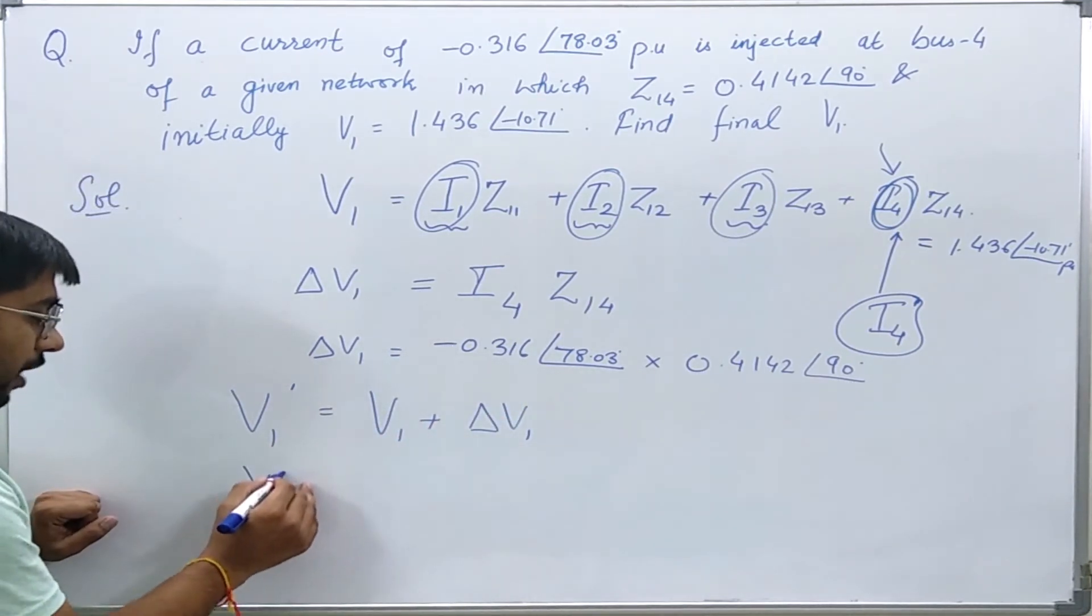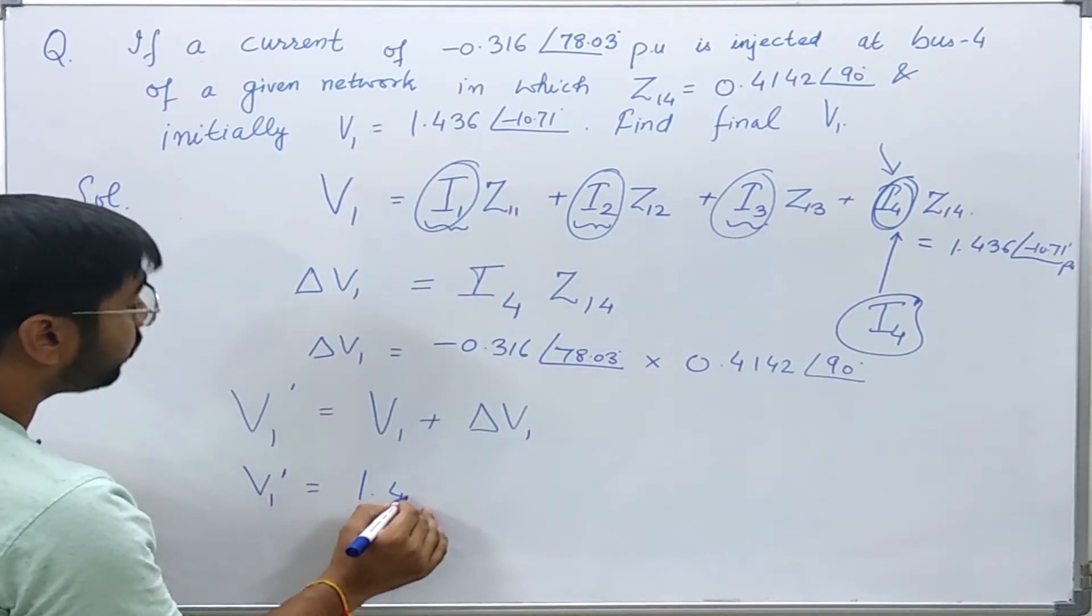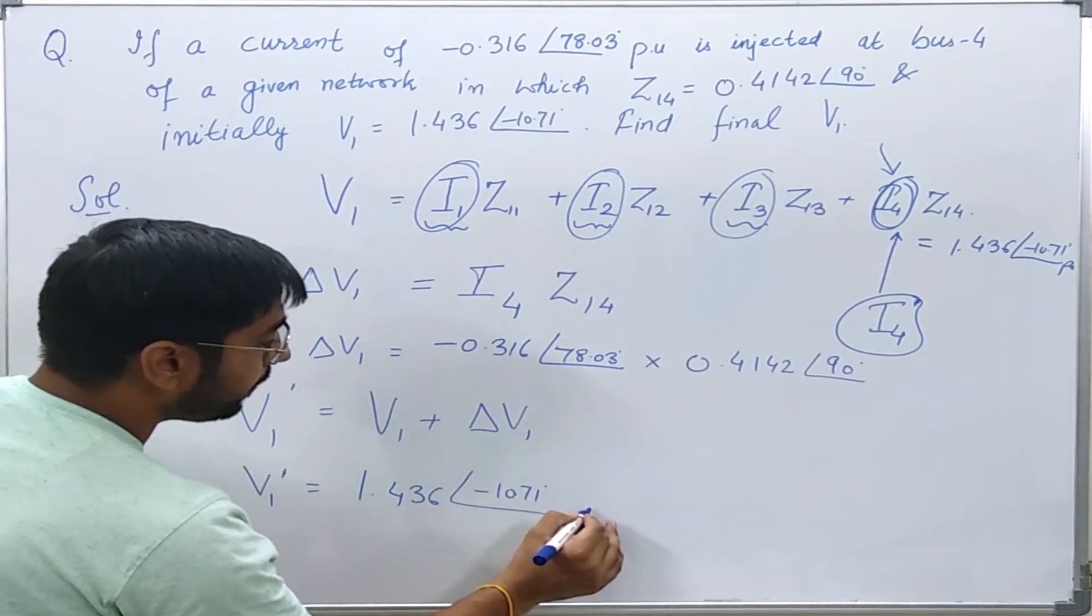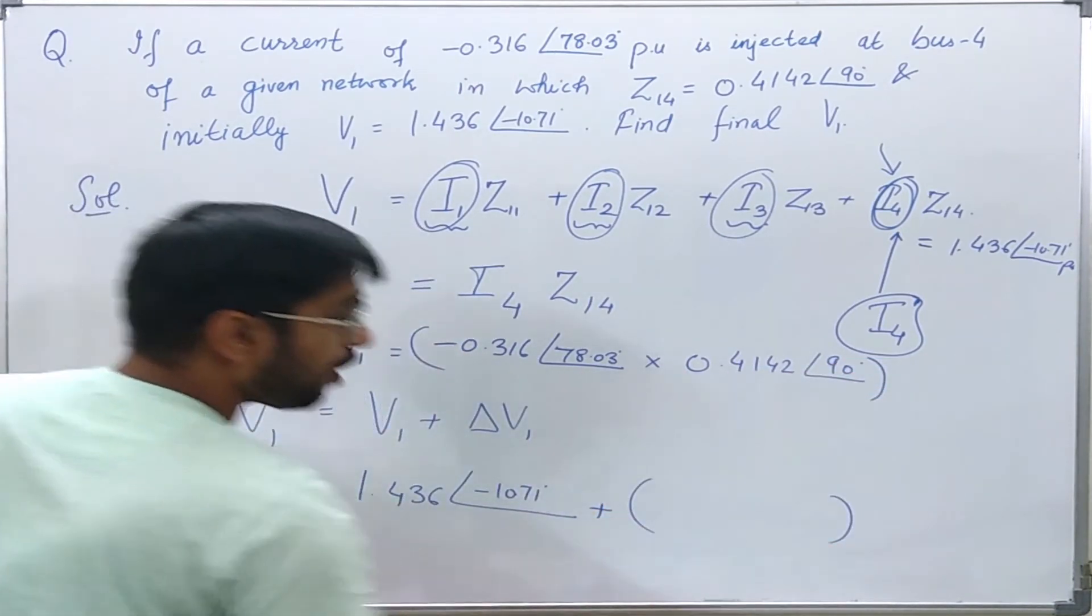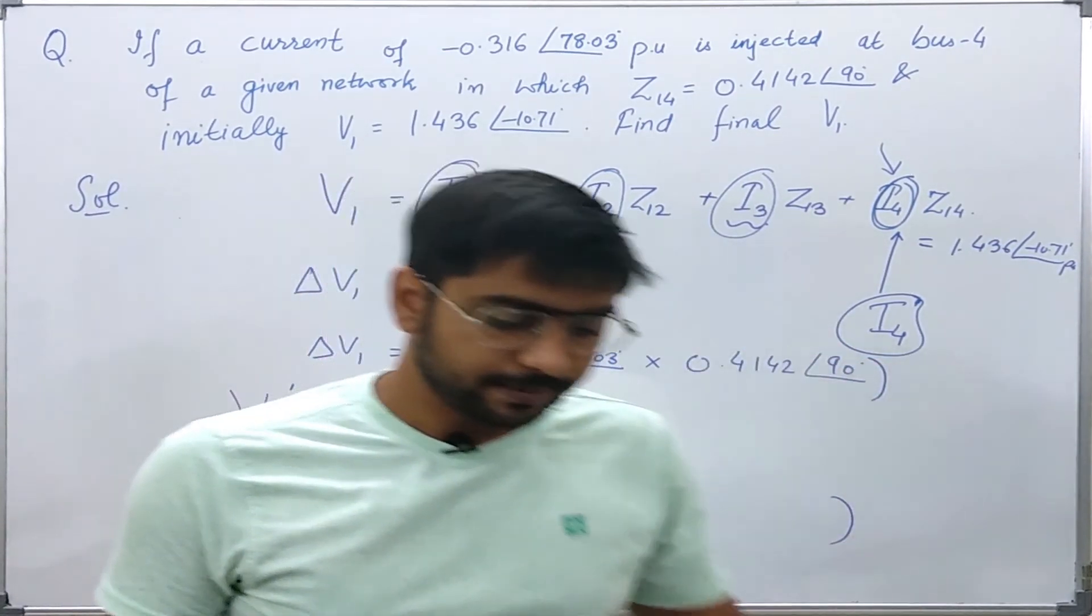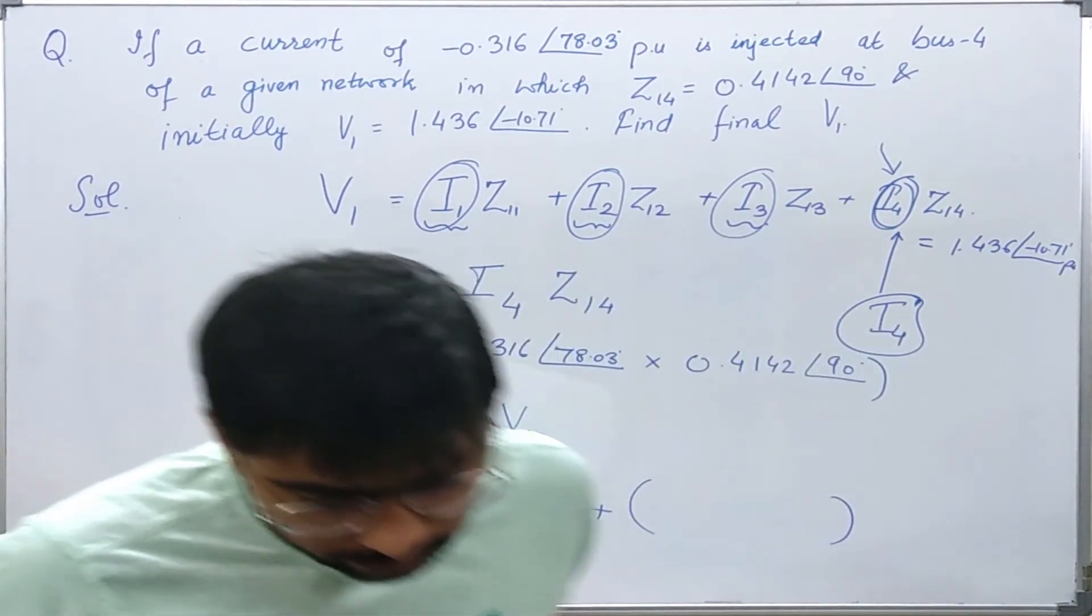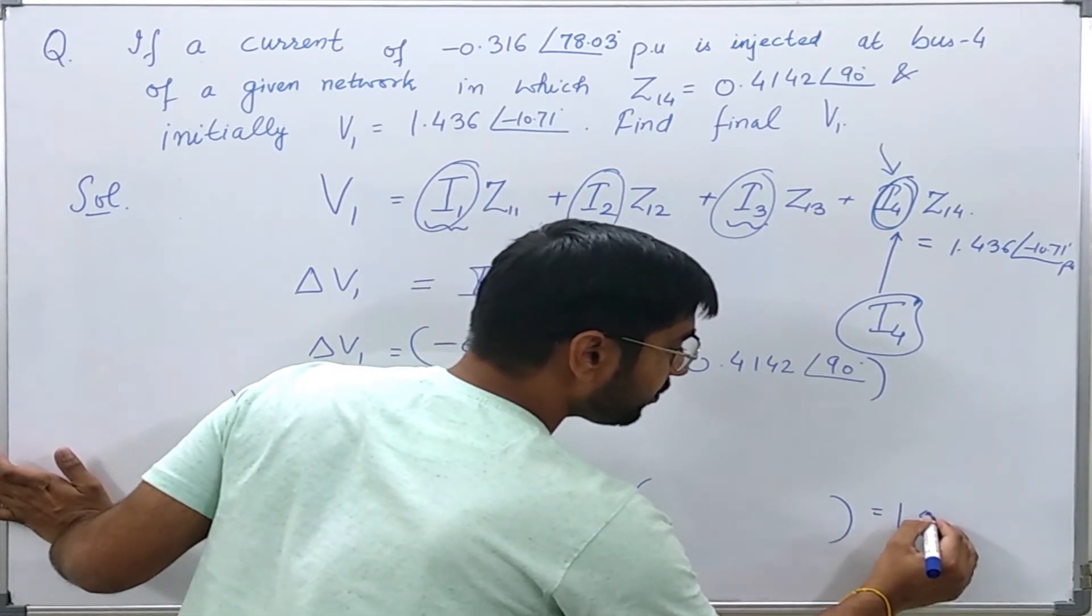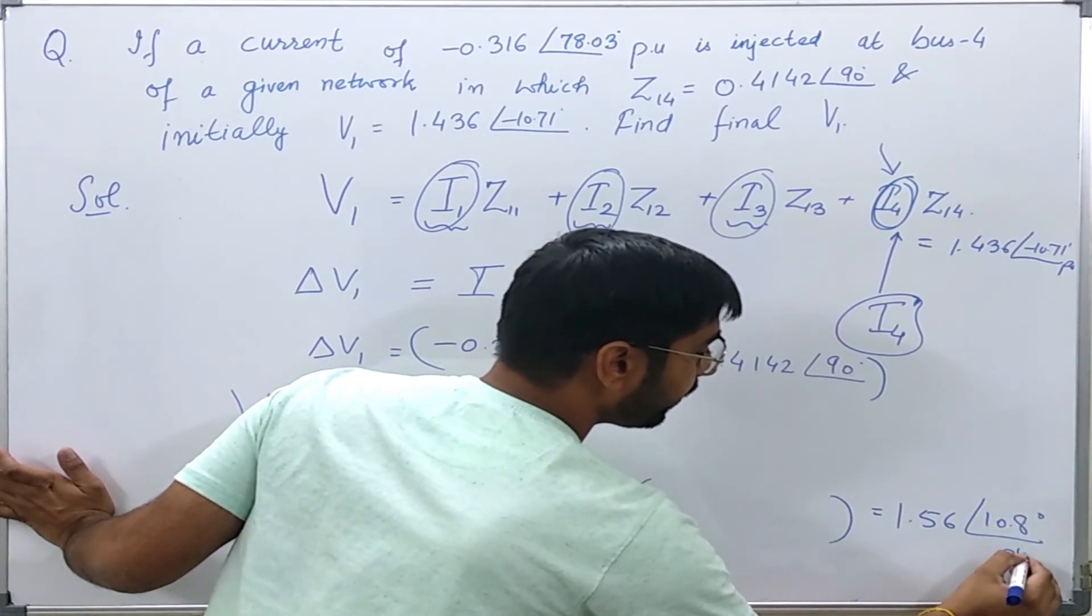We can find the new value of the bus 1 voltage just by adding these two: 1.436 angle minus 10.71 degrees plus this. I have solved this question and this value comes out to be 1.56 angle 10.8 degrees per unit.